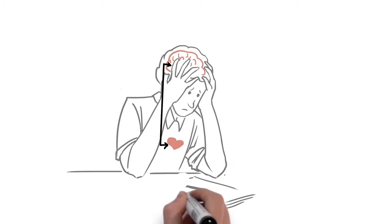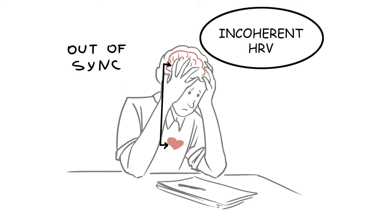Scientists refer to this type of heart rhythm pattern as being incoherent, a sign that the brain and nervous system are out of sync.